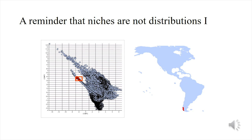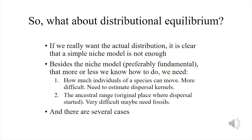So if your niche is that little red rectangle in that part of niche space, you will get a very weird distribution including parts where the species certainly does not exist. And if you move the rectangle somewhere else you get two extreme distributions — one in Chile and the other in the northwestern United States and southwestern Canada.